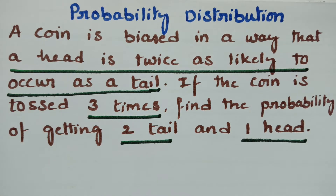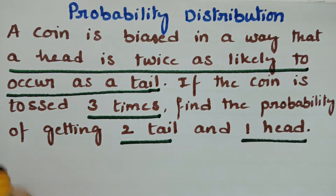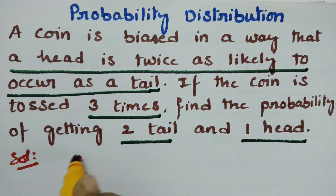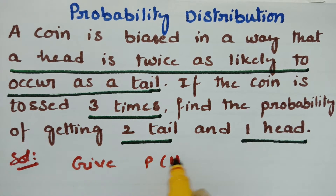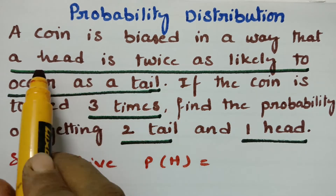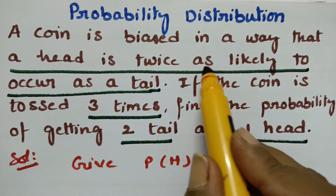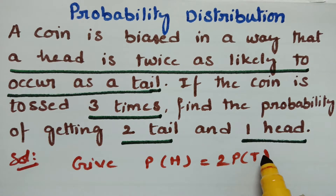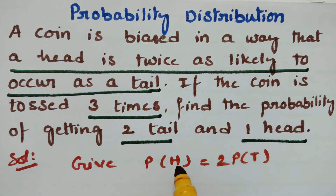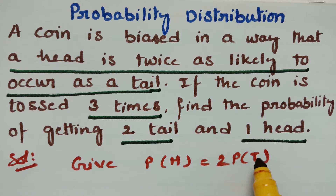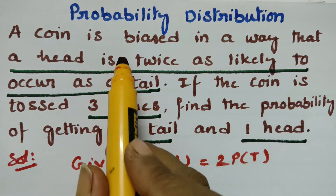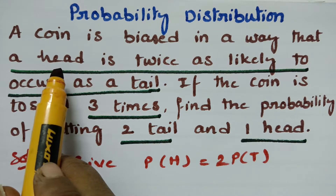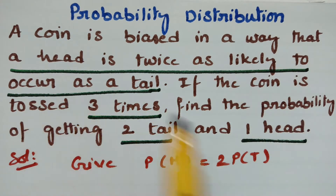It's simple if you understand these steps. First, what is given? The probability of a head is equal to twice the probability of a tail — that is the mathematical statement meaning a head is twice as likely to occur as a tail.